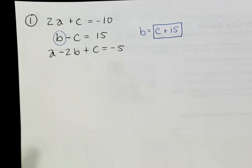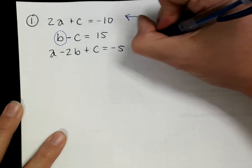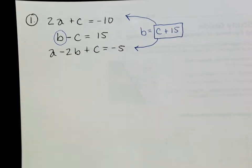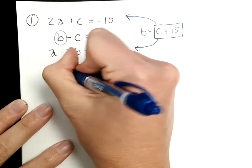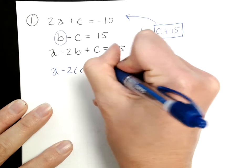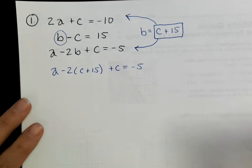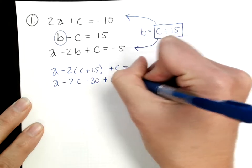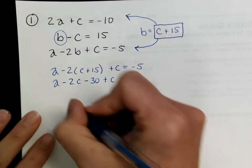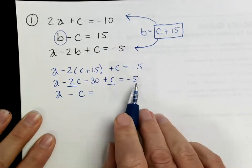I'm going to take this equation and substitute it in for b in both of my other two equations. The top equation has no b, so it's already ready to go. In the bottom equation, substituting in gives a minus 2(c + 15) + c = negative 5. Distributing: a minus 2c minus 30 plus c = negative 5, which simplifies to a minus c = 25.